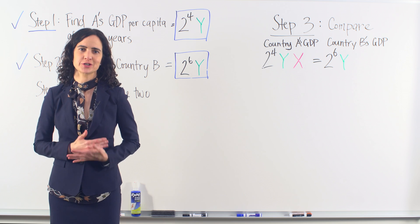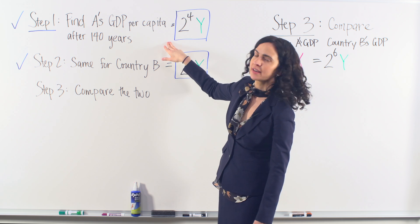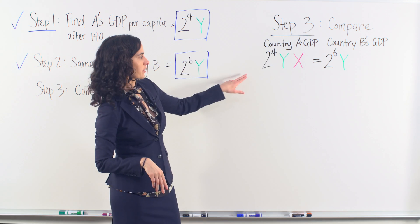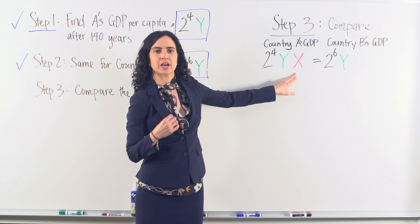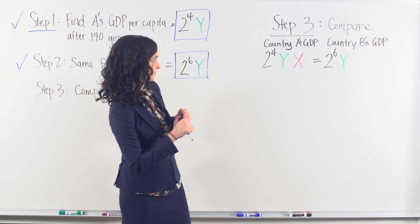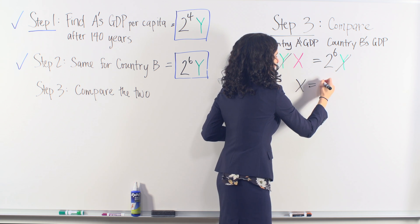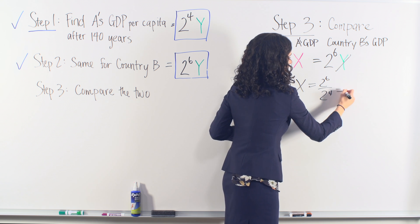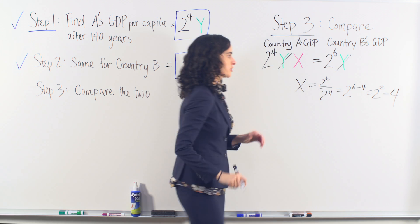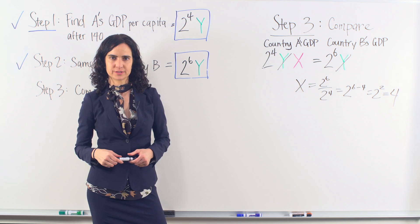We're now ready for step 3 and can finally return to the initial question: how many times larger is country B's GDP per capita than country A's after 140 years? It's obvious the two are not equal, but we can set up an equation to compare and solve. We introduce X to represent the difference between country A's and country B's GDP. Solving for X, we cancel out the Y's and then using the law of exponents in division, we get 4 — meaning country B's GDP per capita is 4 times larger than country A's after 140 years. And that's the answer.